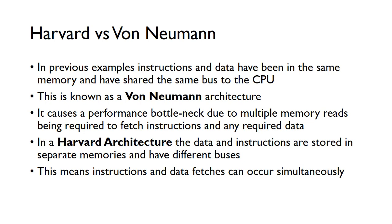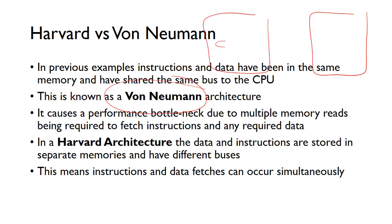We've previously seen examples where memory contains both instructions and data, and the instructions and data are in the same memory, sharing the same bus that connects them to the CPU. This is known as a von Neumann architecture, where you've got a CPU connected by one bus to a single memory that contains both instructions and data.